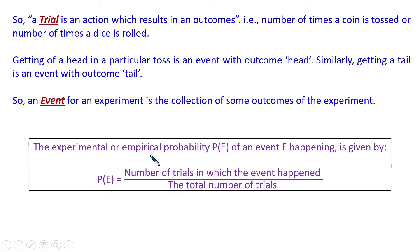Empirically or experimentally, the probability of an event happening is given by the number of trials in which the event happened divided by the total number of trials. For example, if I tossed 50 times and 10 times I get a head, the probability of getting head is 10 divided by 50 — which is one fifth. Generally, there will be some random fluctuations. You can obtain experimental probability by doing a large number of trials.